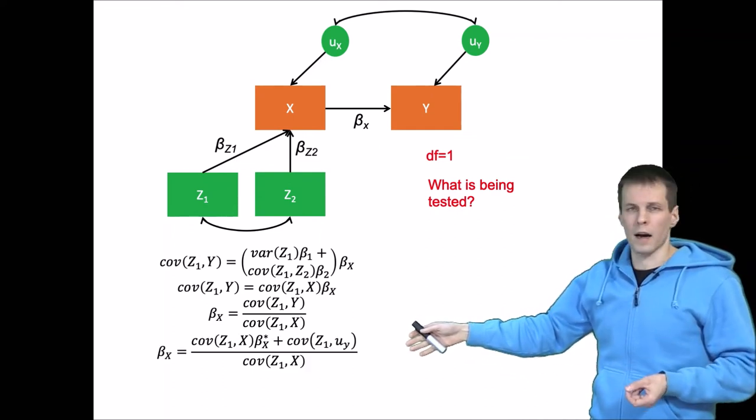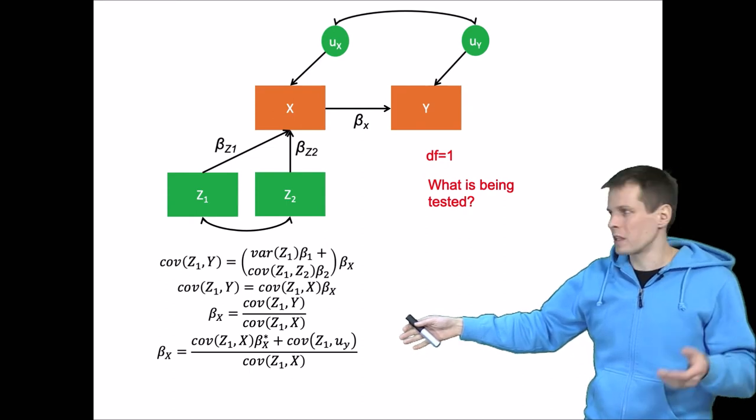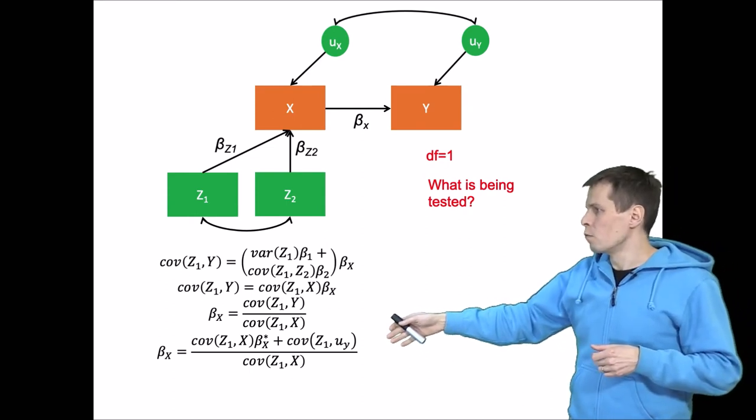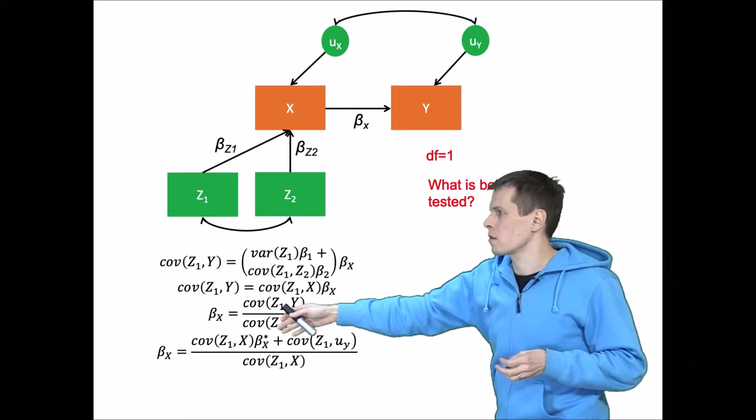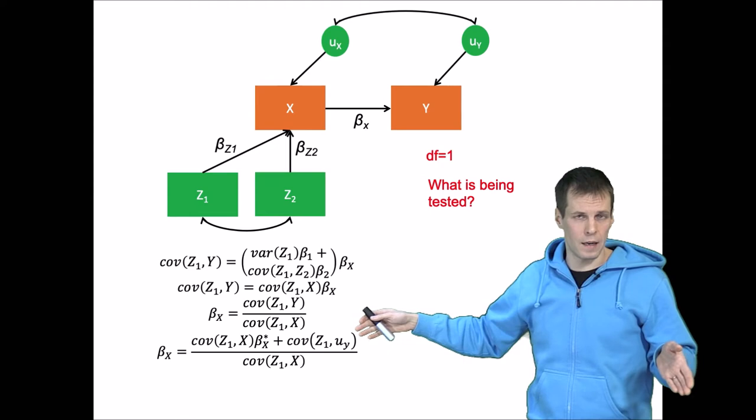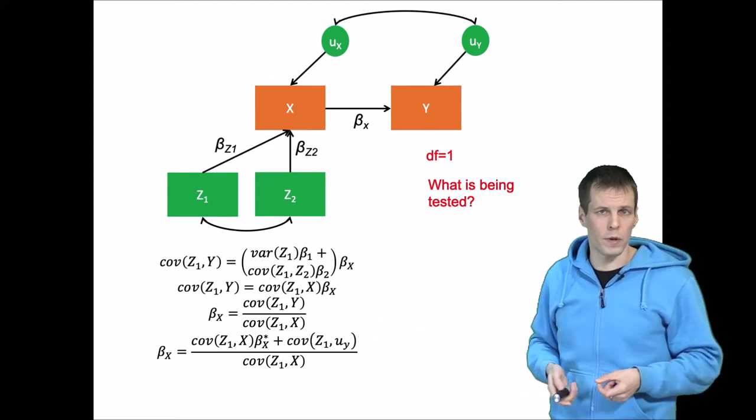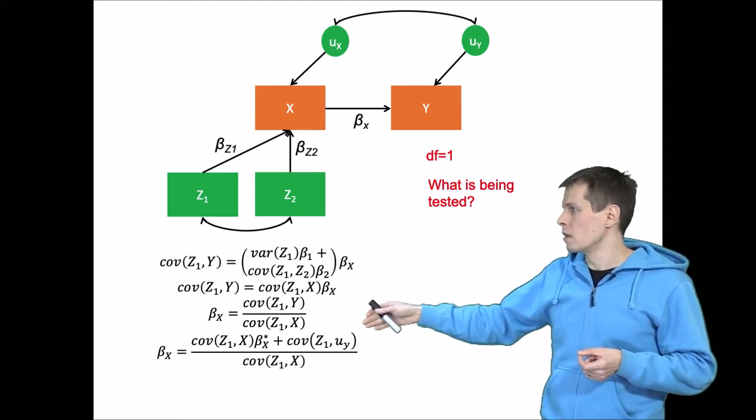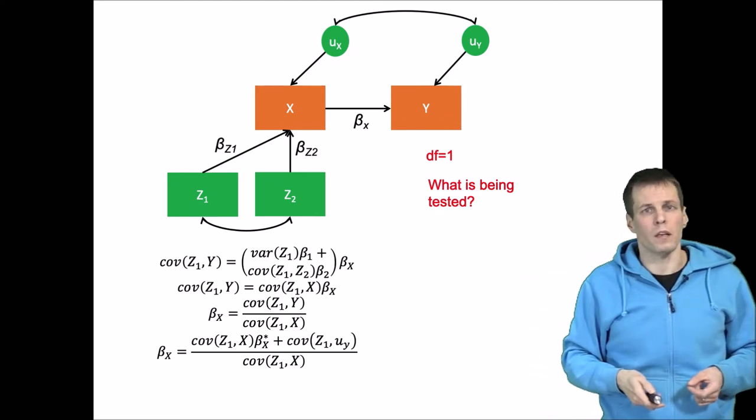So the actual estimate beta X—I'm omitting the hats for simplicity—would be a function of the population value and the correlation between the instrument and the error term. So we can see that if this is non-zero, then our estimates will be inconsistent.